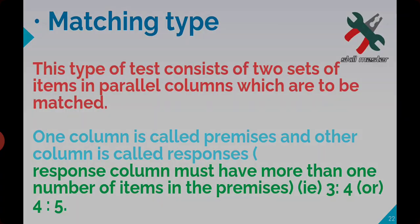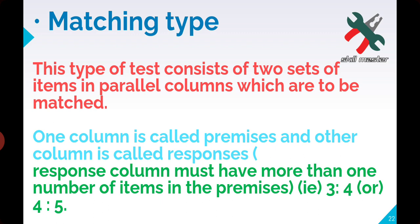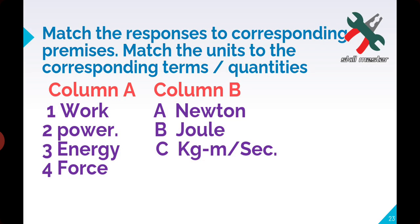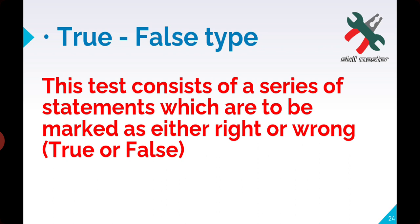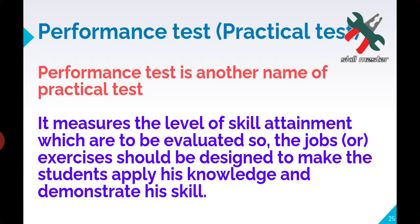In the All India Trade Test, maximum MCQ type tests are used. Next is matching type test — you will have 2 columns: one with statements (premises, column A) and the other with responses (column B). The response column should have more items than the premises column. True or false — you need to identify whether the given statement is right or wrong. Next is performance test, which tests your skill.